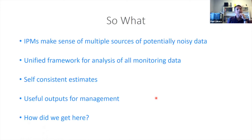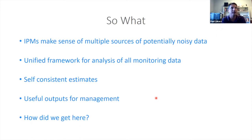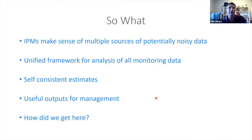What does this really mean for us? These integrated population models are put together to make sense of multiple sources of noisy data — they're not all going to tell you the same answer. The key is that if you look at any of them alone, you might just be looking at noise, but on the whole they bring it together. It brings a unified framework for analysis of all our data, makes sure the estimates are self-consistent, and produces outputs that are useful for management.